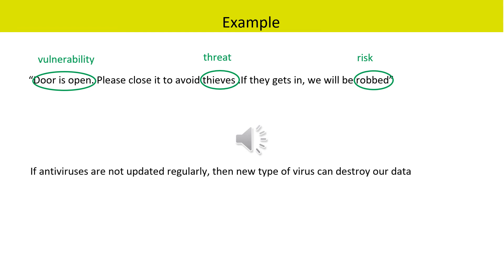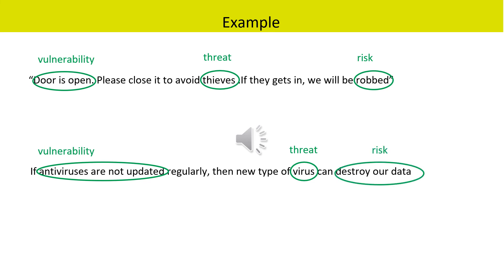Another statement: if antiviruses are not updated regularly, then a new type of virus can destroy our data. A virus is an external factor that cannot be directly controlled by the organization, and hence the virus is the threat in this case. Antivirus not being updated is the weakness of the organization — this is the vulnerability. In this case, if an intruder exploits the expired antivirus software, there is a risk of data destruction.